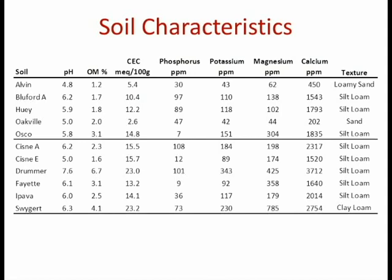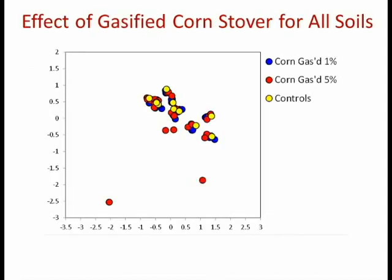Moving on to the actual biochars: the gasified corn stover shows no real effect on bacterial community composition. The yellow, blue, and red dots are all right on top of each other — no shift in community composition over this 60-day incubation. And for the pyrolyzed corn stover, absolutely no change in community composition at all. So when we don't treat the corn stover, we get a shift in community composition, but when we convert it into biochar, it doesn't change the composition of these communities.